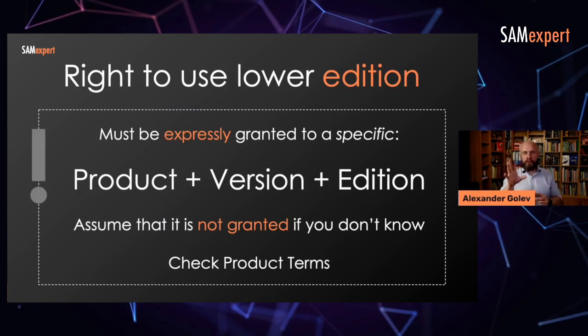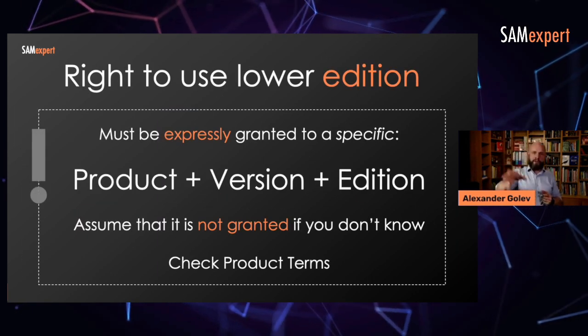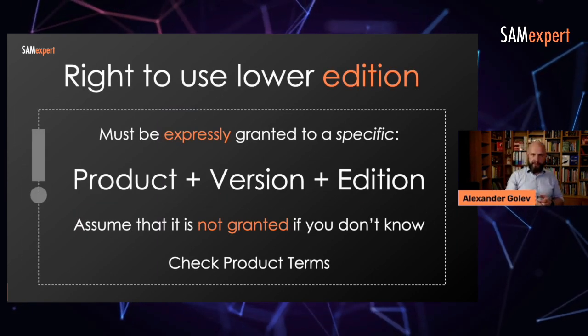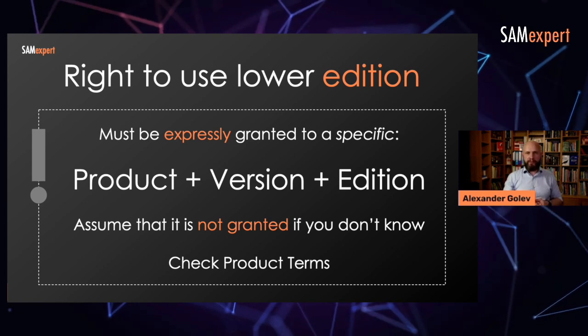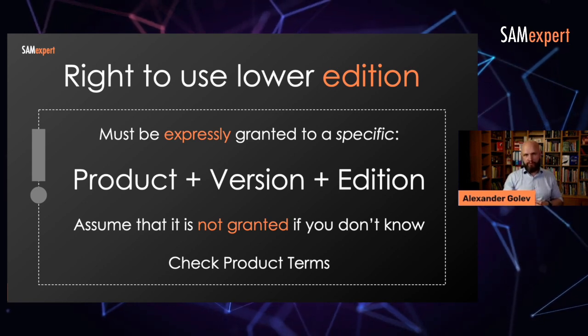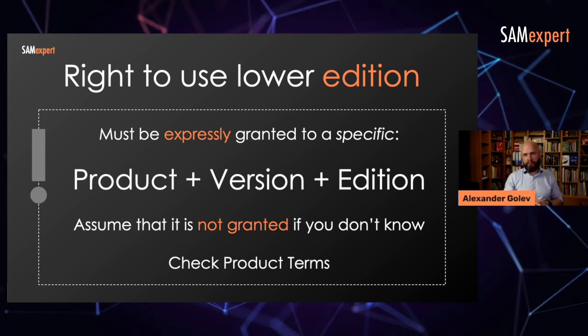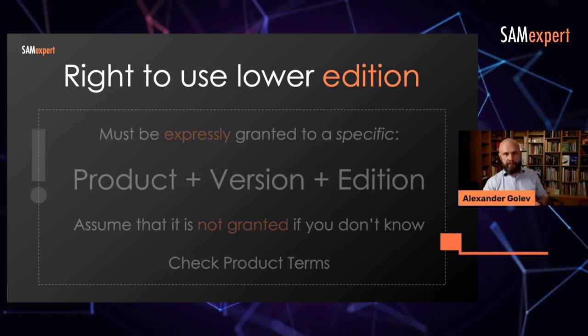Right to use lower edition: this does not automatically exist. It must be expressly and explicitly granted for a certain product, certain edition, certain version. Assume it's not granted.